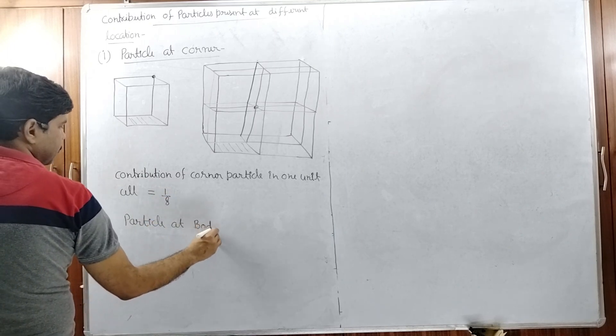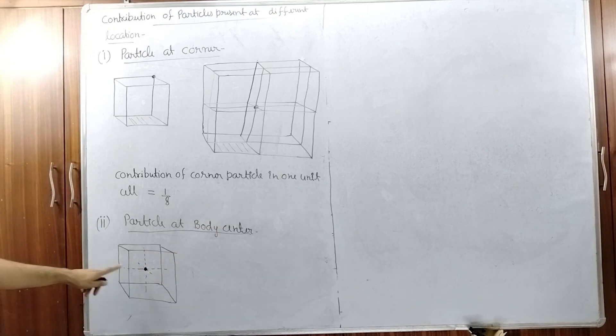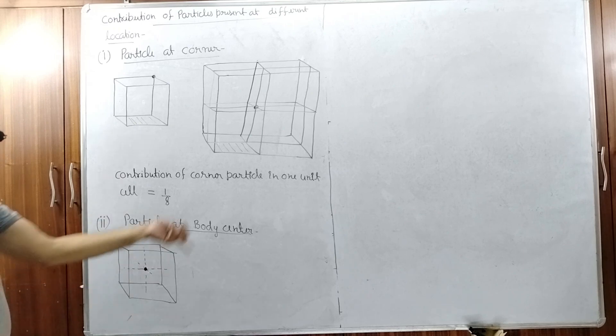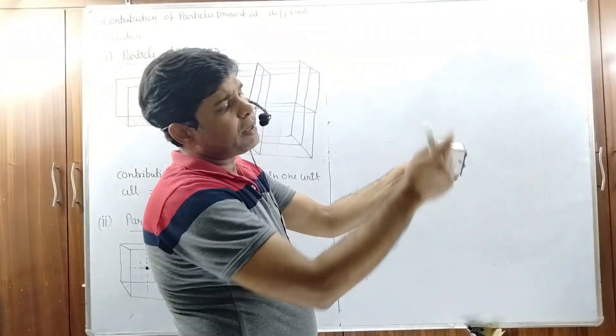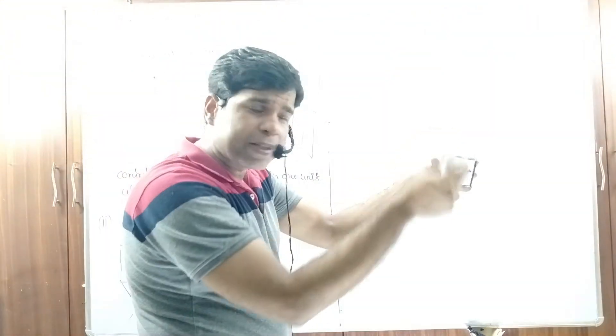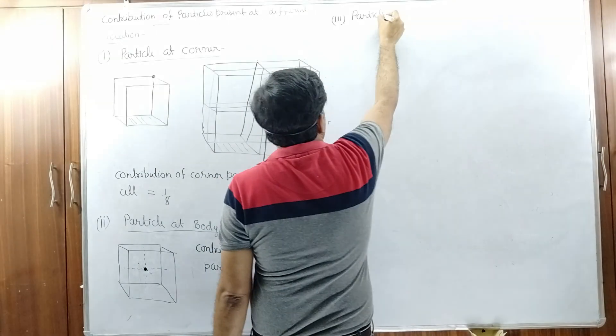For a particle at the body center, this particle is 100% present inside only one box. The contribution of the particle at the body center is always 1, because it is only present in that one unit cell.